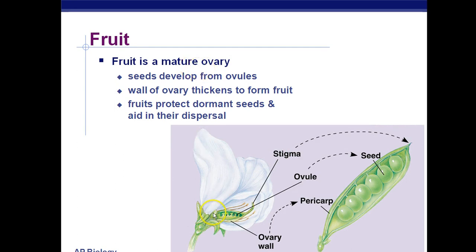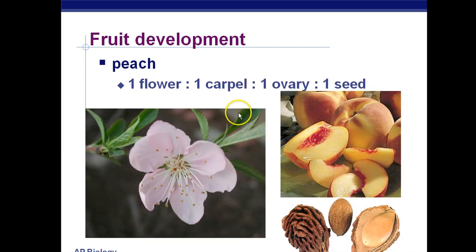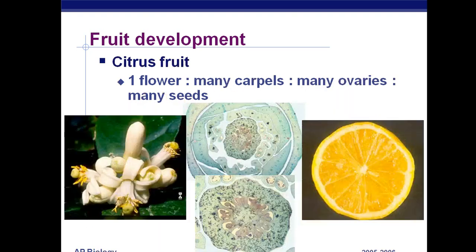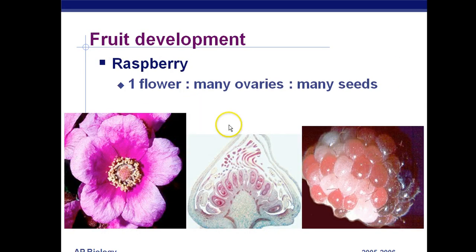A fruit is a mature ovary — the ovary becomes a fruit surrounding the seeds. There's no such thing as a vegetable in science. The walls of the ovary thicken to form fruit, which protects the dormant seeds and helps in their dispersal. For example, a peach has one flower, one carpel, one ovary, and one seed. An apple has a five-carpel flower with many ovaries and many seeds. Citrus fruits have one flower, many carpels, many ovaries with many ovules inside. Raspberries have one flower, many ovaries, many seeds. Ovaries surround the ovules; ovules become the seed, ovary becomes the fruit.